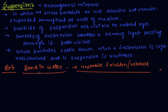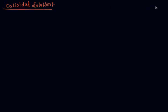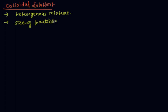Now let's discuss colloidal solution. The first property of colloidal solution is that it is a heterogeneous mixture. The next property is that the size of the particles is too small, not individually visible to the naked eye.